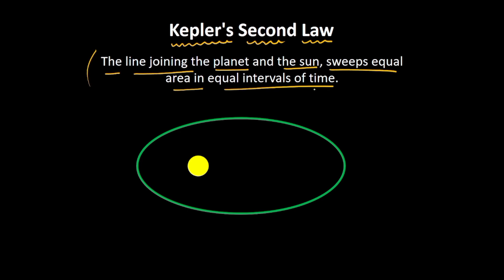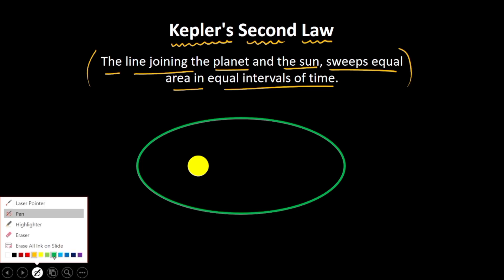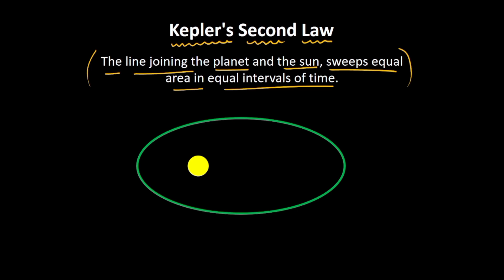In order to understand this statement, we need to understand how the planet is revolving around the sun. You might be familiar with Kepler's first law of planetary motion, which says that the planet revolves around the sun in an elliptical orbit such that the sun is located at one of the foci of the ellipse.